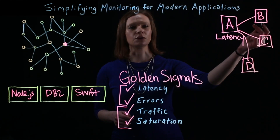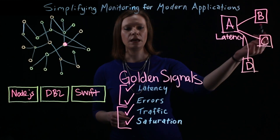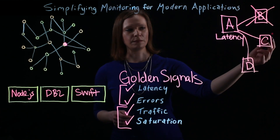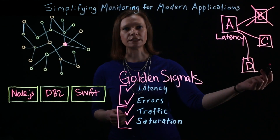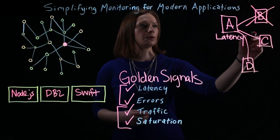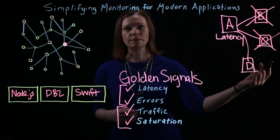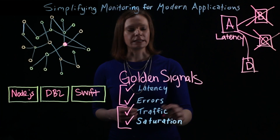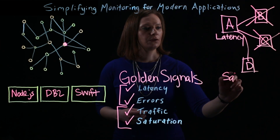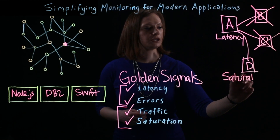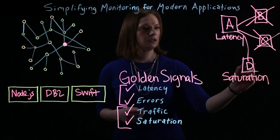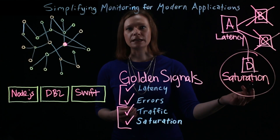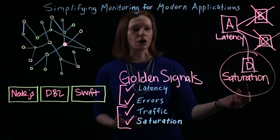No matter what technology these services are built on, all we need to do is look at the golden signals. Let's say we look at the golden signals for service B and everything looks fine — service B is not the problem. Service C, same scenario: we don't see any issues, so we can eliminate that. Now for service D, let's say we're seeing an issue with saturation, which is trending upwards.